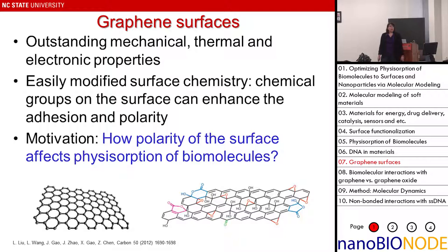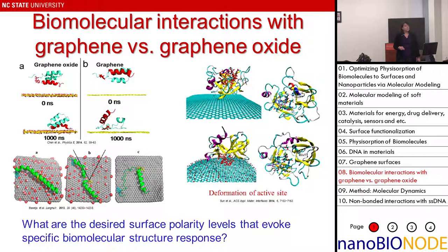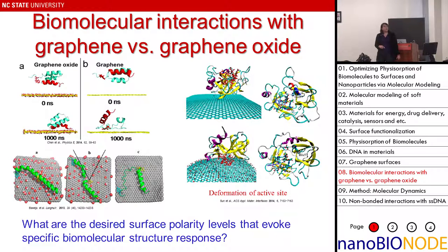We'll look at DNA and an example of silk. We're not the first people thinking of controlling polarity with graphene oxide. These are recent papers from 2013-2014 showing simulations of interactions of biomolecules with graphene and graphene oxide surfaces.